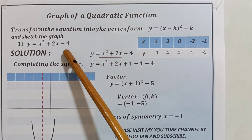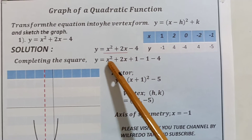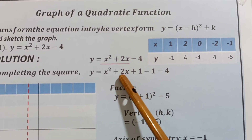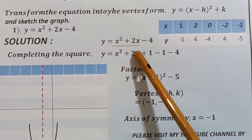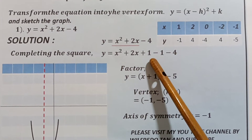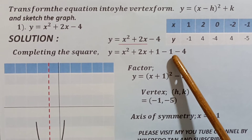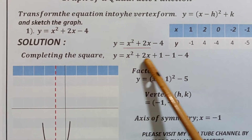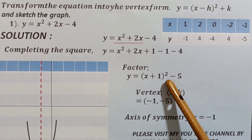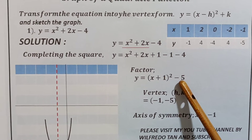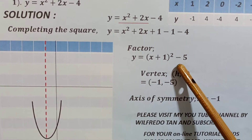What we're going to do is first complete the square of this equation by adding and subtracting 1, so as if we are not doing anything. We add 1 and then subtract 1. So we have x squared plus 2x plus 1 minus 1 minus 4 — we're not altering the equation. Then we factor this trinomial: x plus 1, quantity squared, and negative 1 plus negative 4 is equal to negative 5.